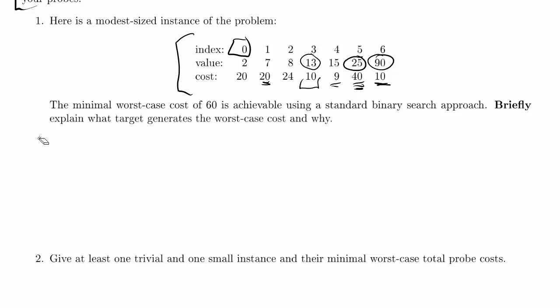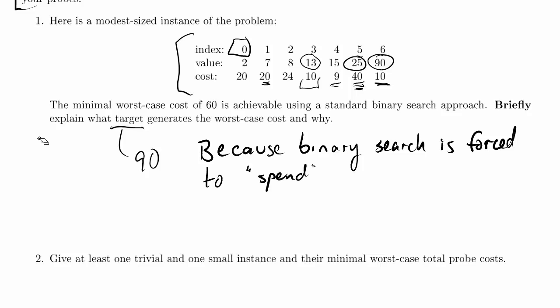So that actually tells us the answer to this. The target is 90. And why does it generate the worst case cost? Just because binary search is forced to spend 60 at most on any target sought in the array. Let's double check for a second that that's actually the worst. I mean, it said it's 60 and we found 60. So that probably is the worst.